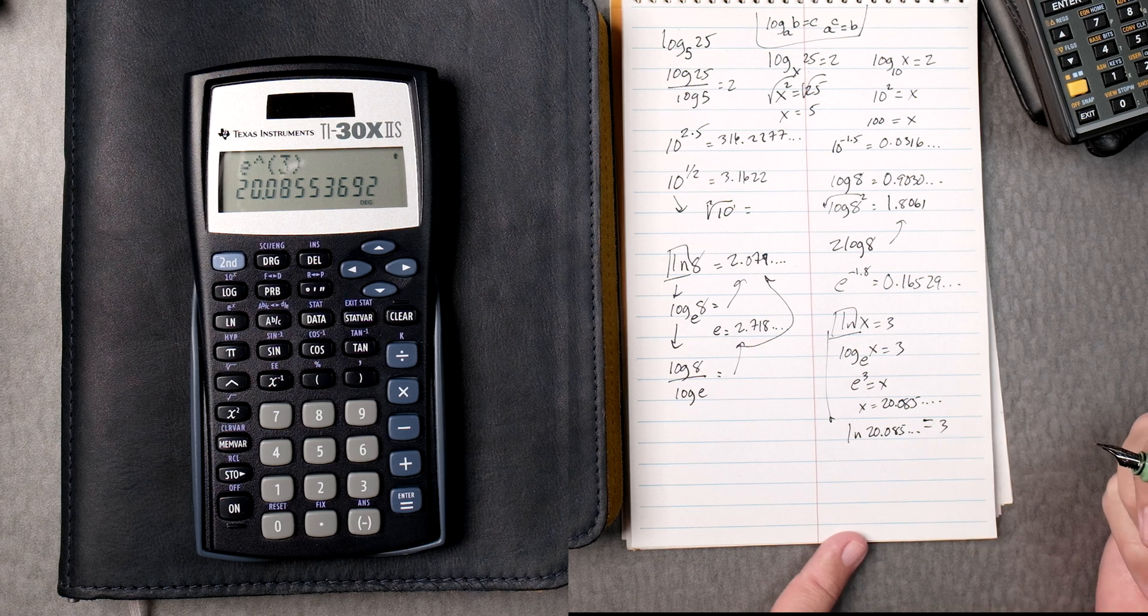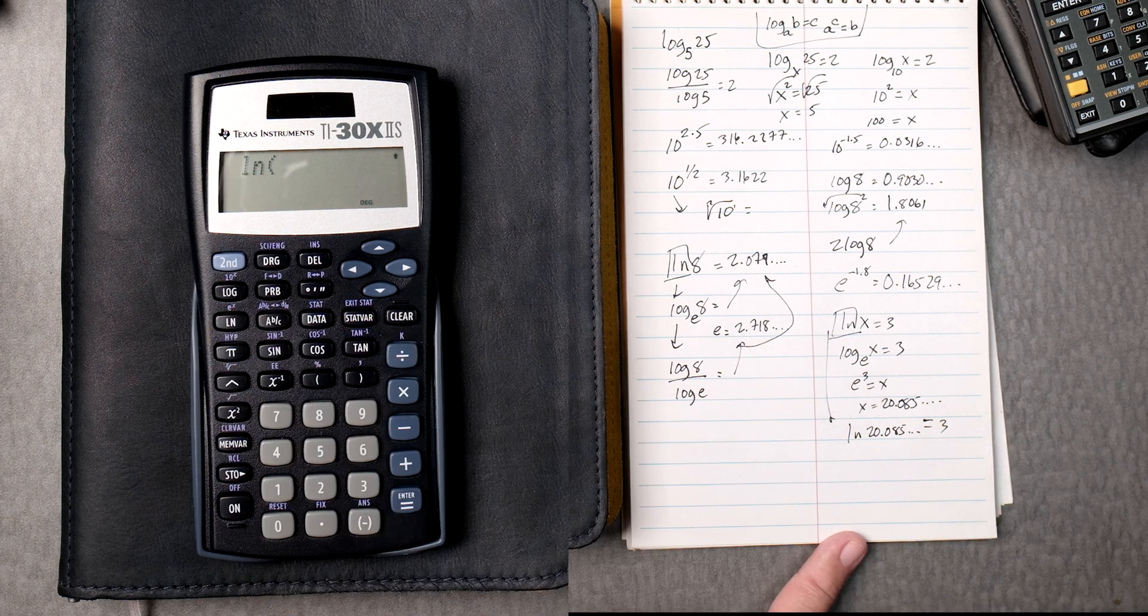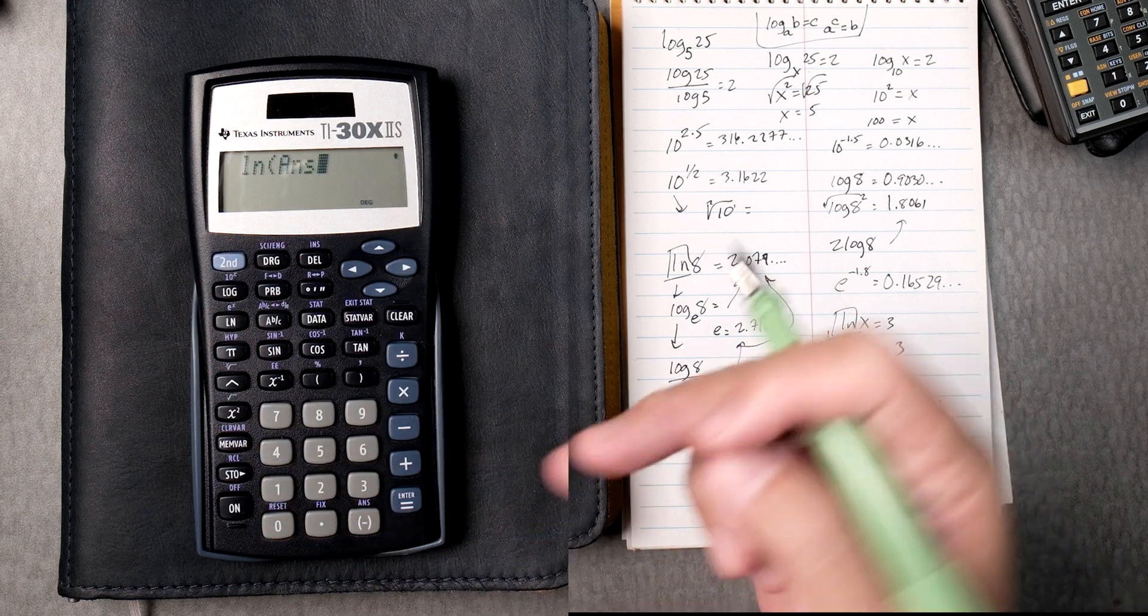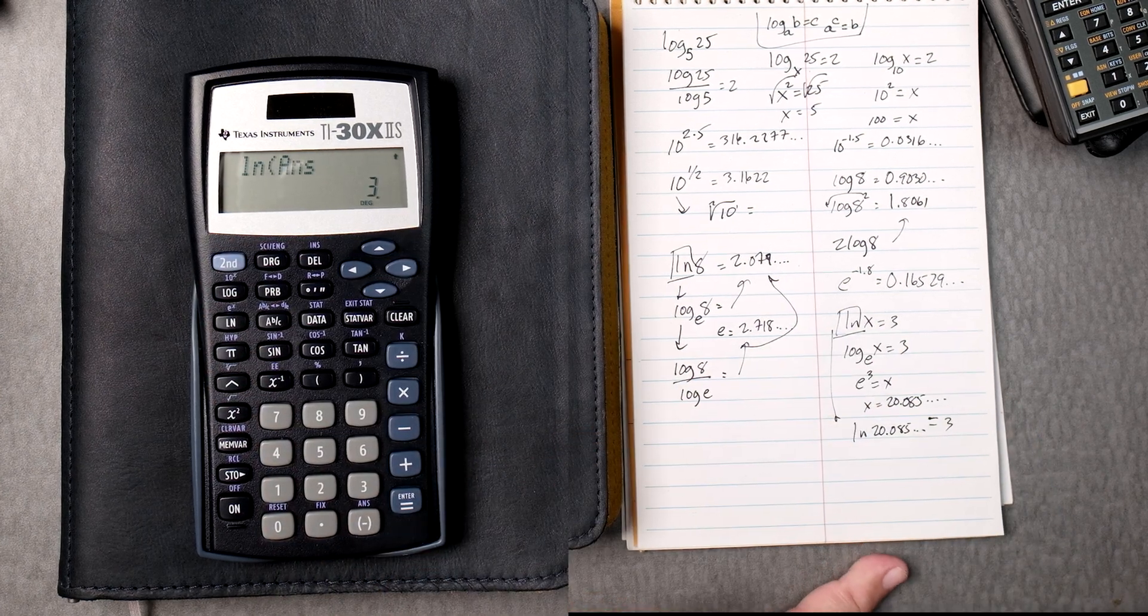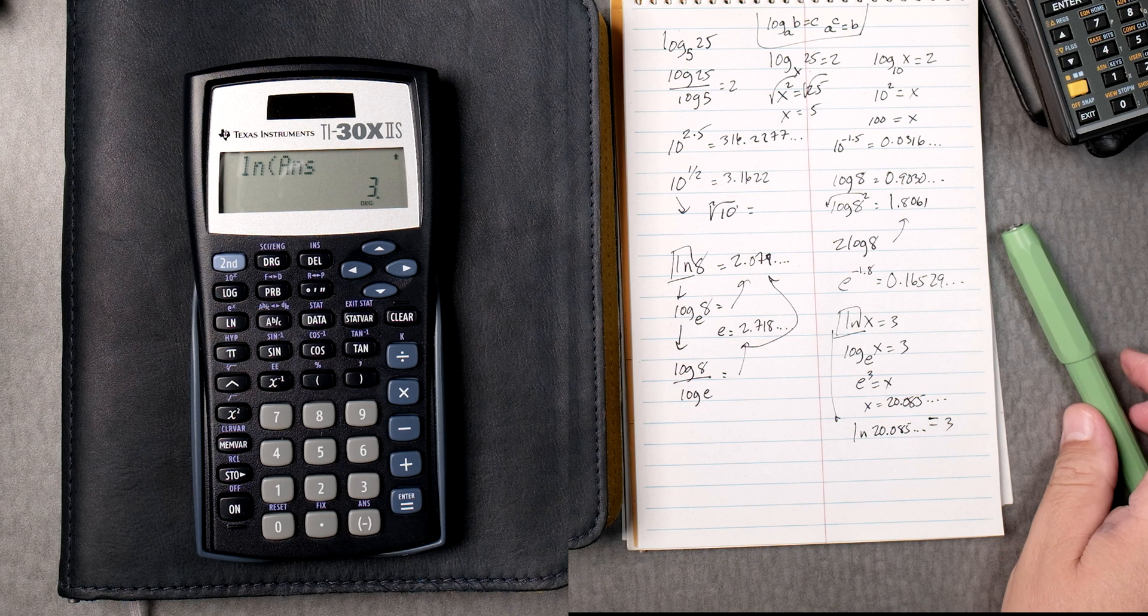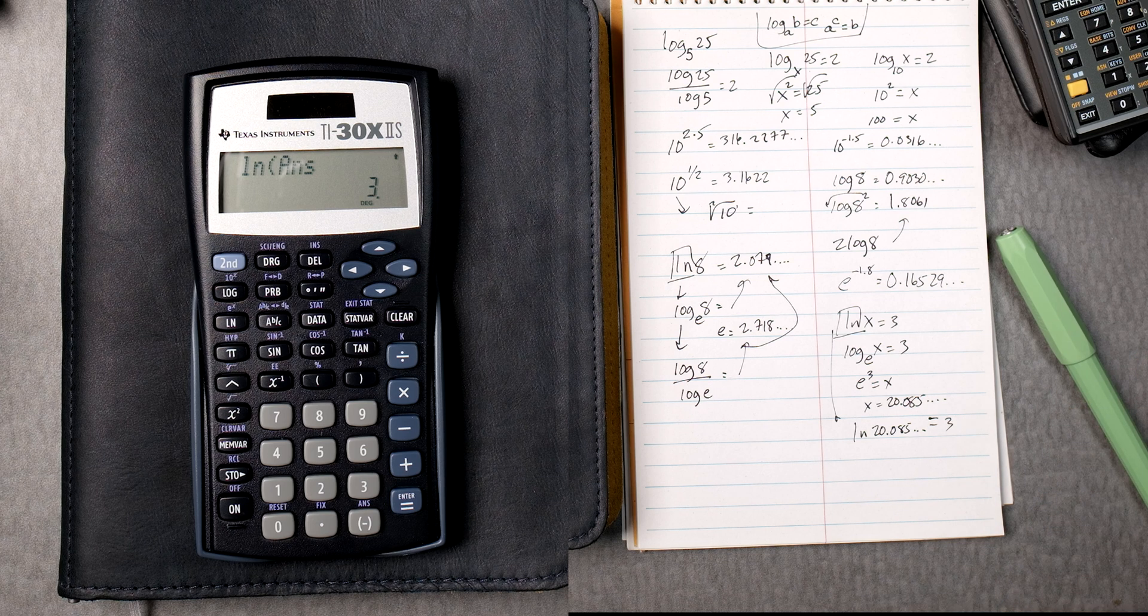That means that the natural log of 20.085 and you keep going, type in all the numbers, should give you 3. Is that right? Well, let's see. You put the natural log and then you say second answer for the previous answer, gives you 3. That's a lot of work. That's a lot of steps. But keep in mind that the more you do it, the better you'll get.